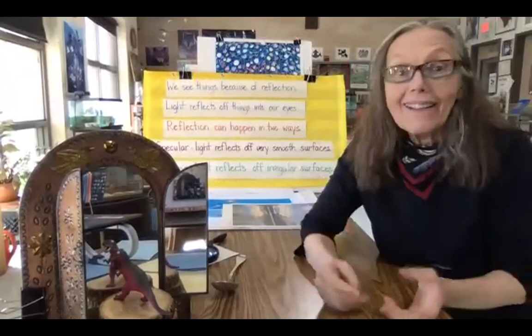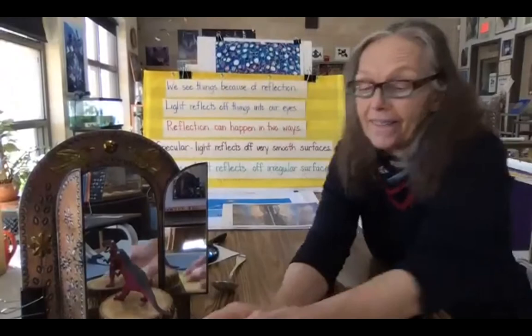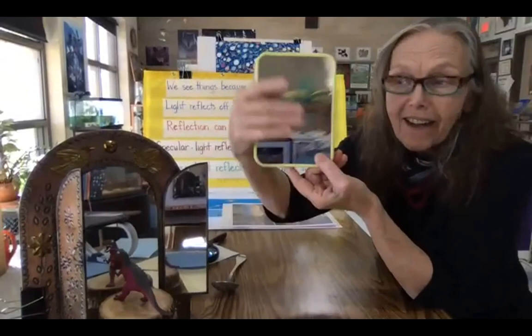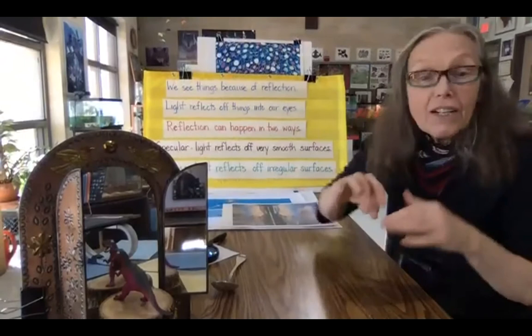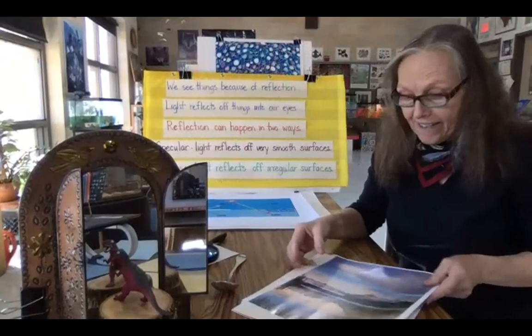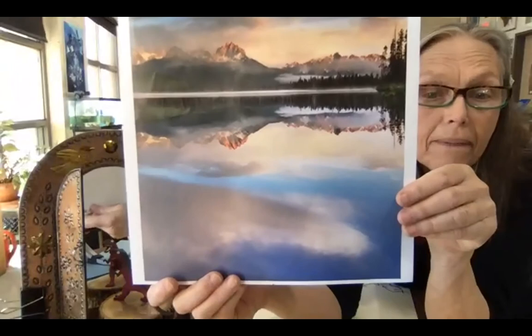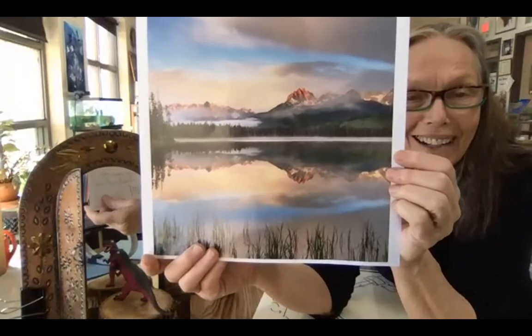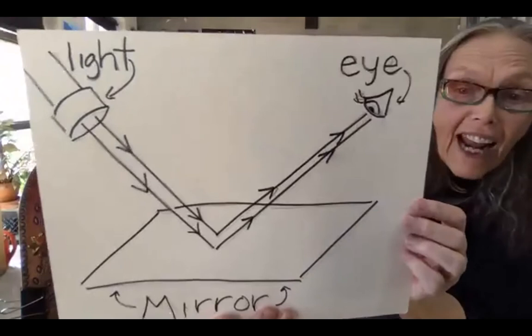Light reflects off things in two ways. The first is specular — what happens with a mirror. It's a very smooth surface and the light comes in and bounces straight back. Most of what we see is diffuse reflection, meaning the surface is irregular so light reflects in different directions. For instance, a calm lake can reflect a mountain perfectly because the surface is very smooth — that's specular. Light comes in a straight line and bounces back in a straight line, which is why we see the reflection.